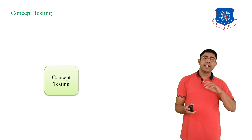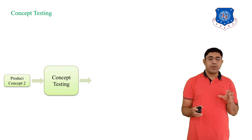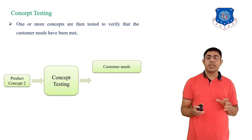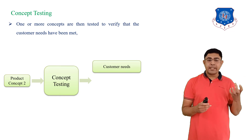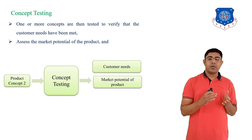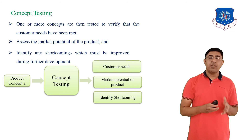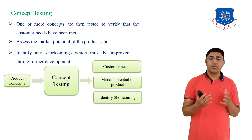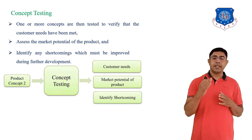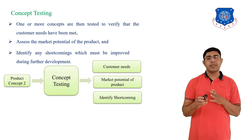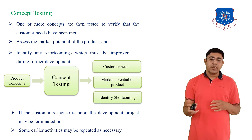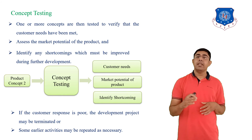Once the concept is selected, the next step is concept testing. Assuming the most promising concept selected is product concept 2, that concept must be tested against customer needs — whether our selected concept satisfies the customer needs. Next it is tested for the market potential of the product, and shortcomings are identified which must be improved during development. If the customer response is poor, the development project may be terminated, and some earlier activities may be repeated if necessary.